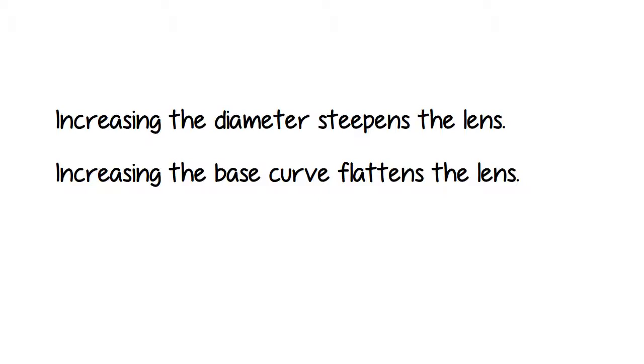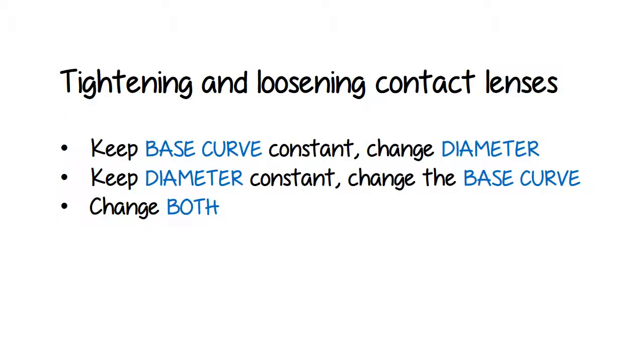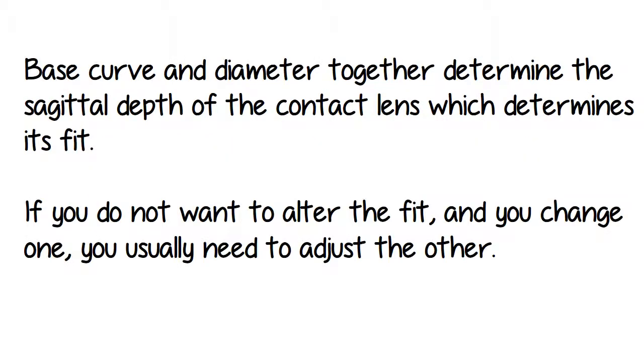Increasing the base curve flattens the lens. And with both, which was our third option, we can just do a little of each. So what this whole video is saying: the base curve and diameter together determine the sagittal depth, or vault, of the contact lens, which determines its fit. Now, if you don't want to alter the fit and you change one, you usually need to adjust the other to compensate. And why would that happen?